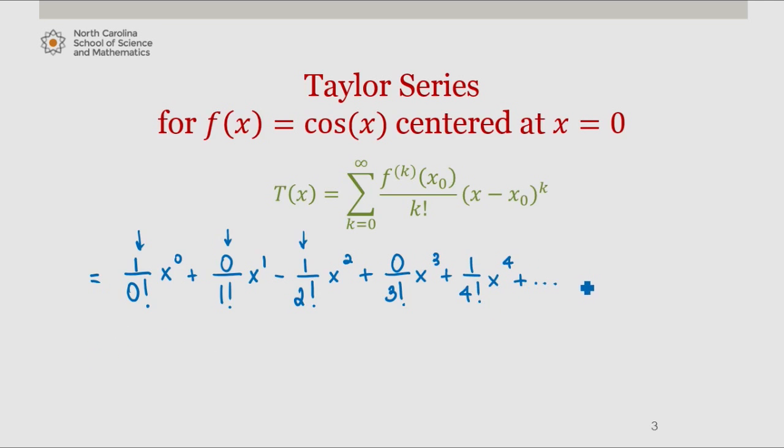We find that this is equal to 1 minus x squared over 2 plus x to the fourth over 4 factorial and so on.